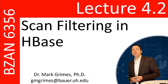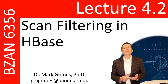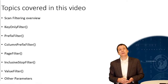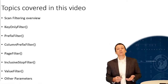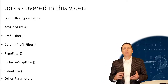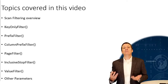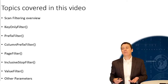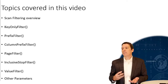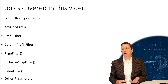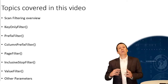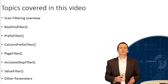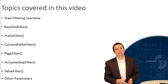Welcome to video 4.2 where we are going to be talking about how we can enhance our reads by using scan filtering in HBase. We're going to start with a quick overview of what scan filtering is, and then we have six filters to discuss: the key only filter, the prefix filter, the column prefix filter, page filter, inclusive stop filter, and value filter. We'll close out by talking about a few other parameters we can use in our scan and get statements.